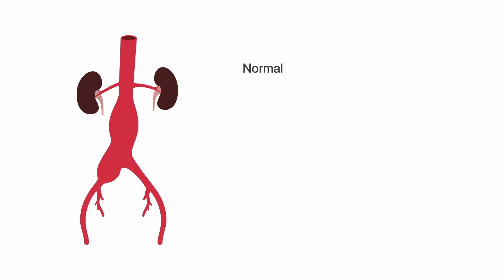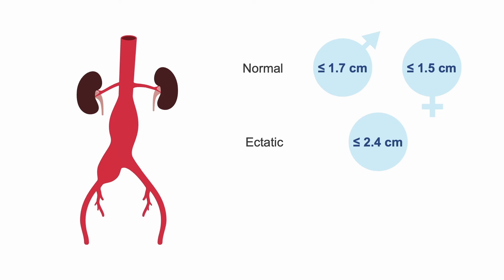The maximum normal common iliac artery diameter is 1.7 cm for males and 1.5 cm for females. For both genders, the common iliac artery is ectatic up to 2.4 cm and aneurysmal at 2.5 cm.